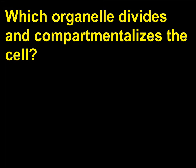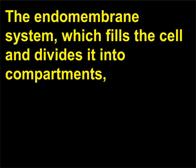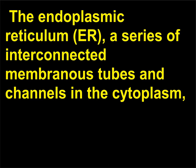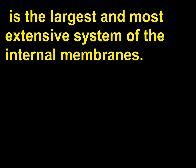Which organelle divides and compartmentalizes the cell? The endomembrane system fills the cell and divides it into compartments, and is visible only through electron microscopy. The endoplasmic reticulum (ER)—a series of interconnected membranous tubes and channels in the cytoplasm—is the largest and most extensive system of the internal membranes.